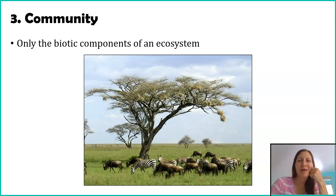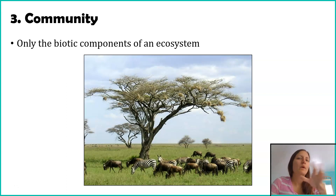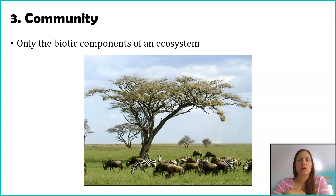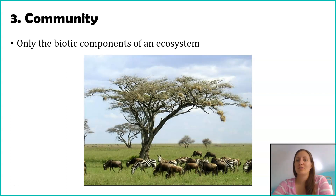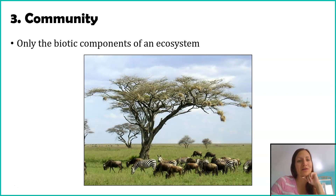Why does the community level matter for environmental science? If lions go extinct because humans have overhunted them, we might see an increase in the zebra population. More zebras eat more grass, which means less food for wildebeest, pushing them toward extinction. So when humans change something in a community, there are so many interactions between organisms that we start impacting other things, which may ultimately impact us — and we'll be exploring this more throughout the unit.